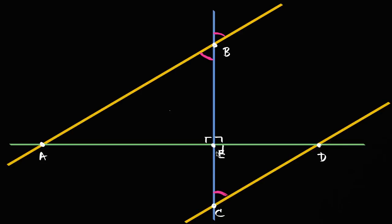If we look at triangle CED and triangle ABE, we see they already have two angles in common. If they have two angles in common, their third angle has to be in common as well, because the third angle is just 180 minus the other two. So we notice all three corresponding angles are the same: the blue angle has the same measure as the other blue angle, the magenta angle has the same measure as the other magenta angle, and the remaining angles are both right angles.